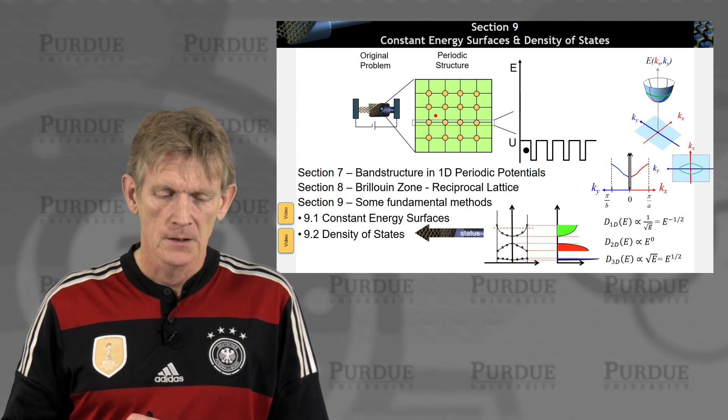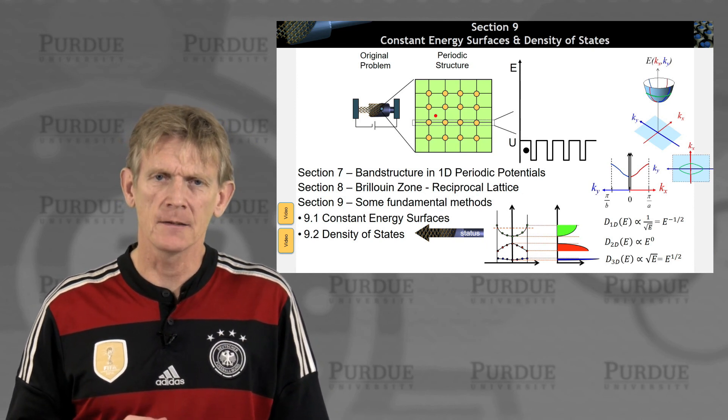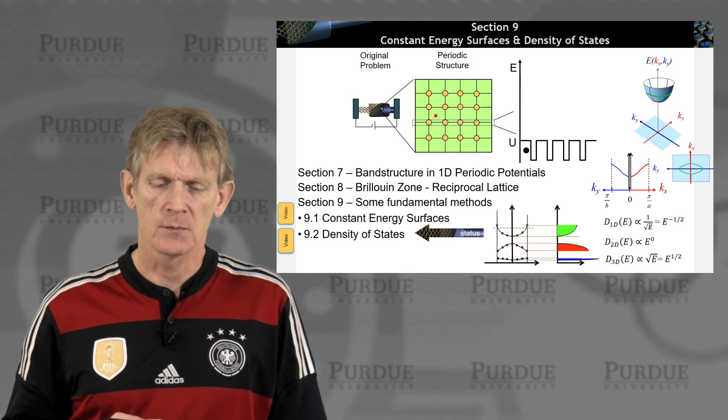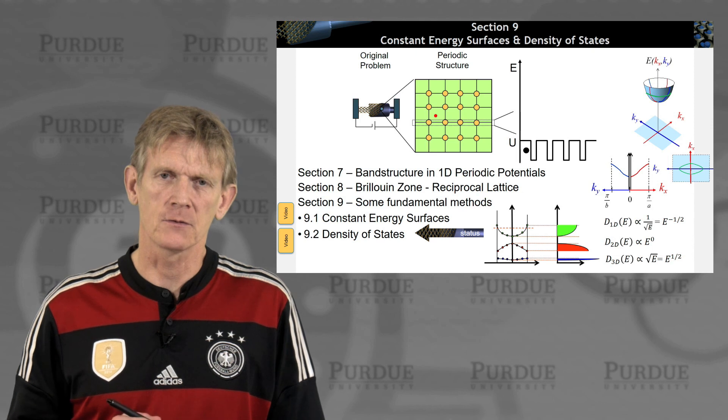The formula E equals E0 plus h-bar squared k squared over 2m star will follow you around for a while if you do these classical devices that are described by a single effective band. All right. So really that concludes the sort of tools of the trade, and we can begin to expand all of this now into real materials and real material descriptions, which we will do in the next section. Thank you.